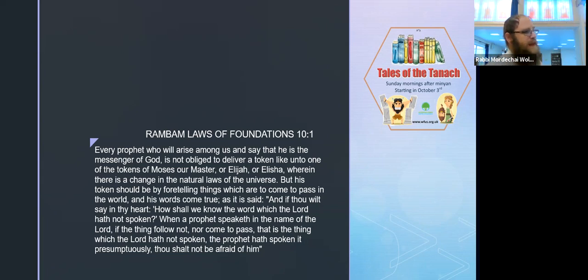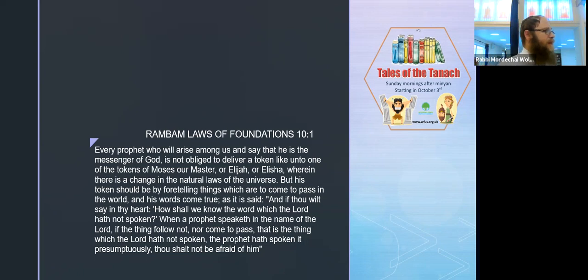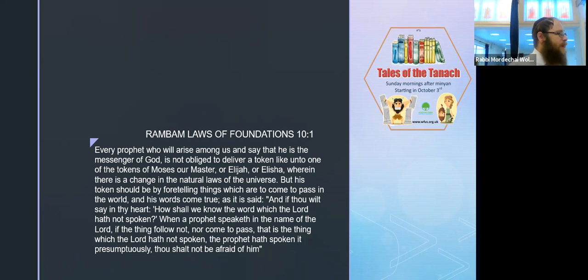There are people today who give blessings, predict things, and great rabbis who have said things that have come true - clearly some foresight and divine insight - but not at the level experienced in the times of the prophets. What were these millions of prophets doing? Presumably they had certain insights or revelations, but they were probably quite individual. To have national revelations - to tell the Jewish people this or that - that's a different level, far less common.